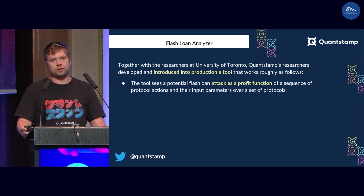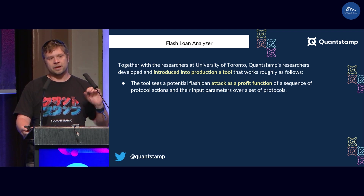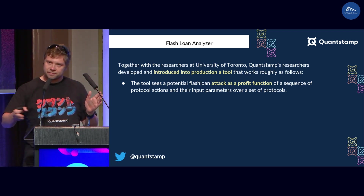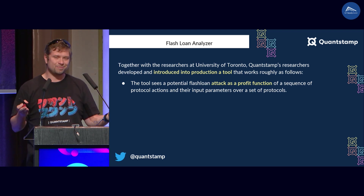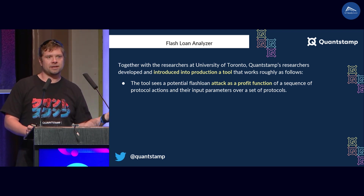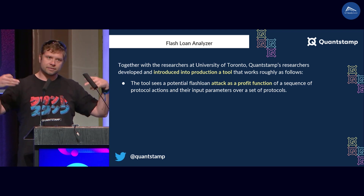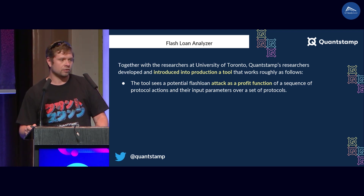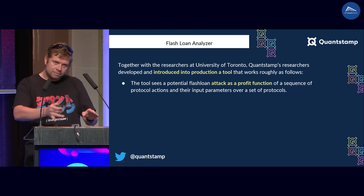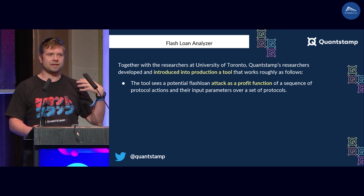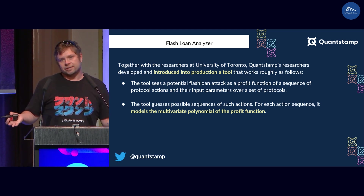I discovered work by a student at the University of Toronto, who we partnered with at Quantstamp and brought into production. The tool works roughly as follows: it perceives the entire protocol and the sequence of actions you can perform on it as a profit function — a function of the potential profits to the attacker. For something like Compound, you can deposit funds, withdraw funds, or liquidate somebody. There are various parameters for these function calls — those are variables of a multivariate polynomial.